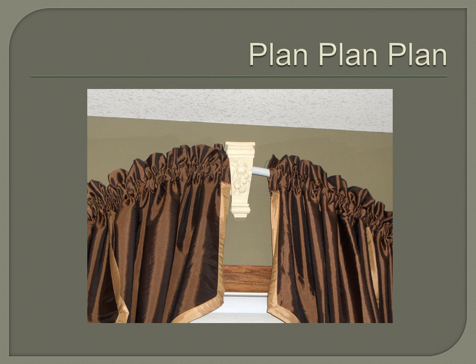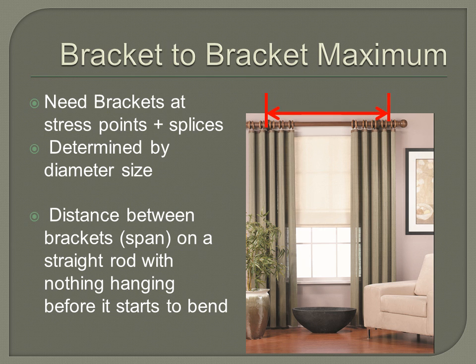It really does always come down to planning, planning, planning — so you don't end up with a scenario like pretty silk draperies and a carved keystone paired with what looks like a PVC rod. Some pre-planning would not have allowed for that. You also want to know your bracket-to-bracket maximum, particularly when working in specialty applications like corner windows or large picture windows. Always have brackets at stress points and wherever your splices are.